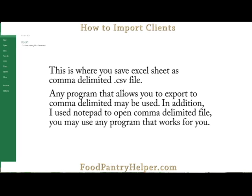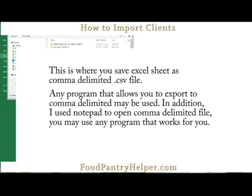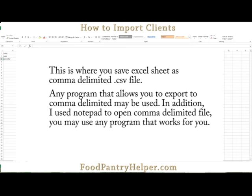Then I can go to File, Save As, and I want to save it as a comma delimited file. I'll just call it Book Two for now. I have chosen comma delimited .CSV file. I'm going to hit Save. It asks do you want to keep that format — I'll say yes. And now I've exported my Excel data into a comma delimited file.